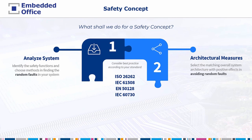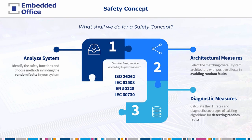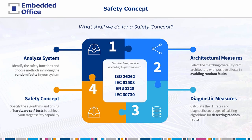In step 2, we identify matching overall system architectures with positive effects in avoiding the most critical random faults. The main topic in this phase is redundancy — we think about which hardware redundancy best suits our safety goal. Step 3 is where we calculate the failure rates and diagnostic coverages of existing algorithms for detecting random faults, and define which diagnostic measures we use to reach the required diagnostic coverage. Any fault we cannot avoid is a fault we must detect before a dangerous situation occurs. In step 4, the overall safety concept is built up — a specification defining the algorithms and timings of hardware self-tests to achieve the target safety capability.